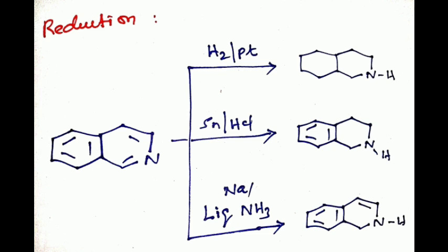Next reaction: reduction. It is also very important. Isoquinoline can be reduced with different reagents to get different products. Isoquinoline reduced with platinum forms decahydroisoquinoline. Isoquinoline reduced with tin with HCl forms 1,2,3,4-tetrahydroisoquinoline. Isoquinoline reduced with sodium with liquid ammonia forms 1,2-dihydroisoquinoline.